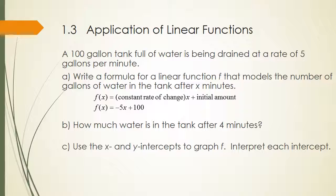An equation of a line is the constant rate of change times x plus the initial amount. The water is being drained at 5 gallons per minute — that's our rate of change, and since it's going down, we use a negative. So we have negative 5x plus the initial amount. The tank started with 100 gallons, so f of x equals negative 5x plus 100. To find how much water is in the tank after four minutes, we replace x with 4, and we get 80 gallons.